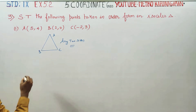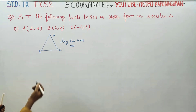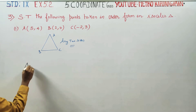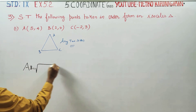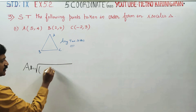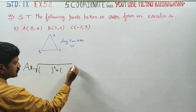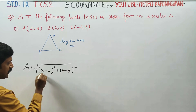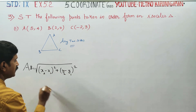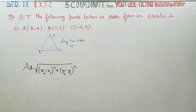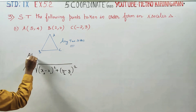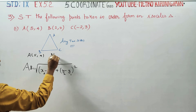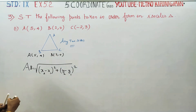First, we will find the three sides. We start with AB. The formula is: square root of (X2 minus X1) squared plus (Y2 minus Y1) squared. Here, point A is (5, 4) and point B is (2, 0). This is the first pair.